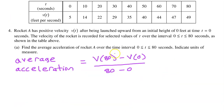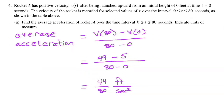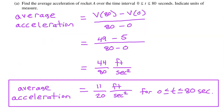The average acceleration over the time interval from 0 to 80 seconds equals the velocity at time 80 minus the velocity at time 0, divided by time 80 minus time 0. The velocity at time 80 is 49, and the velocity at time 0 is 5. This equals 44 over 80, so the average acceleration equals 11 over 20 feet per second squared. Do not forget the units.